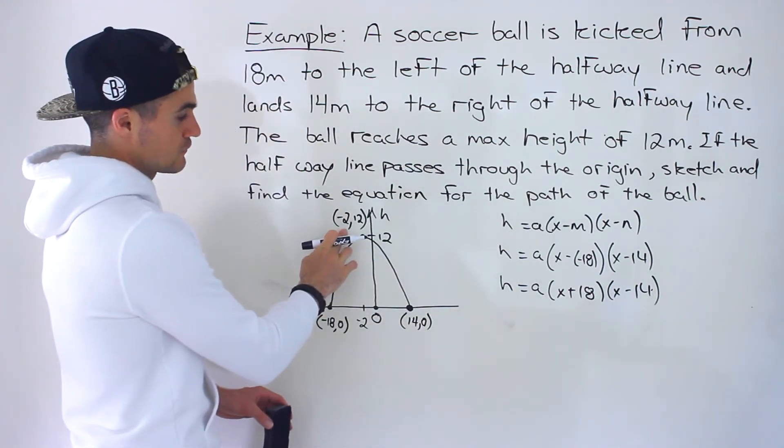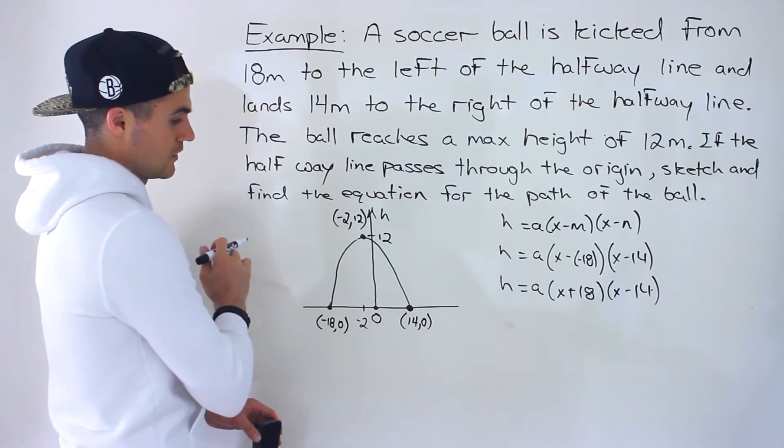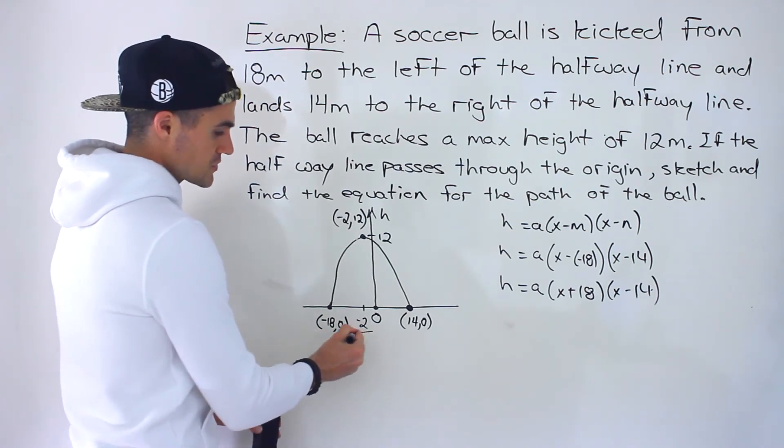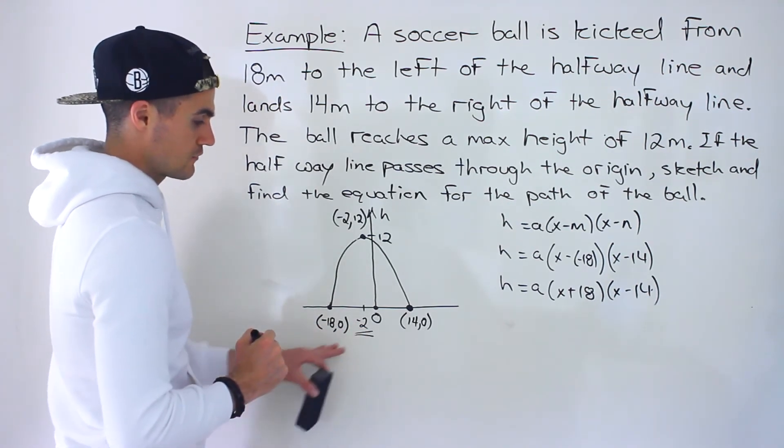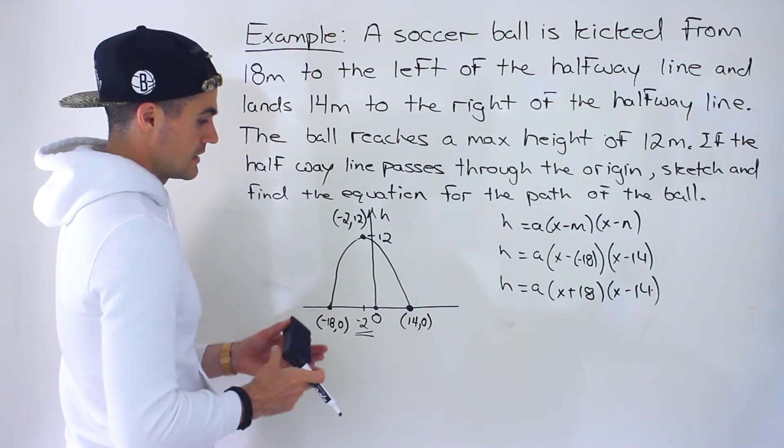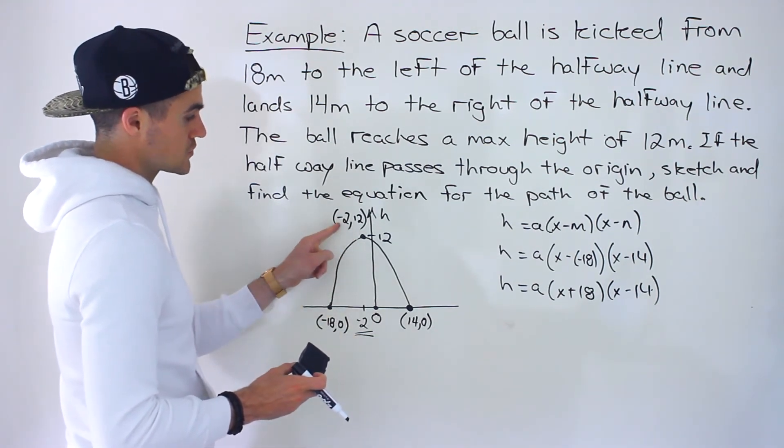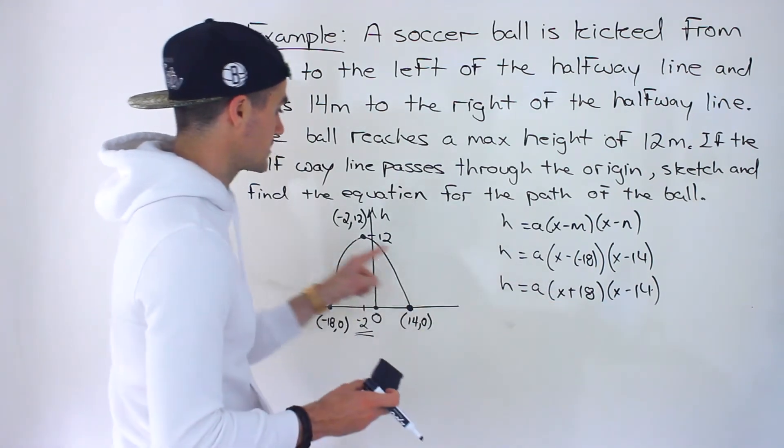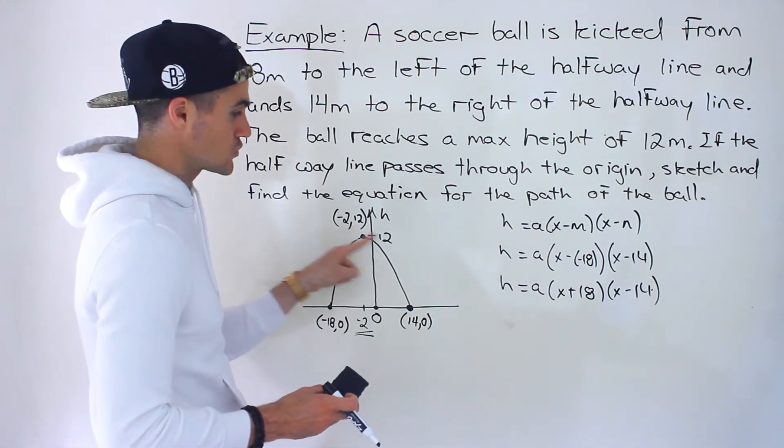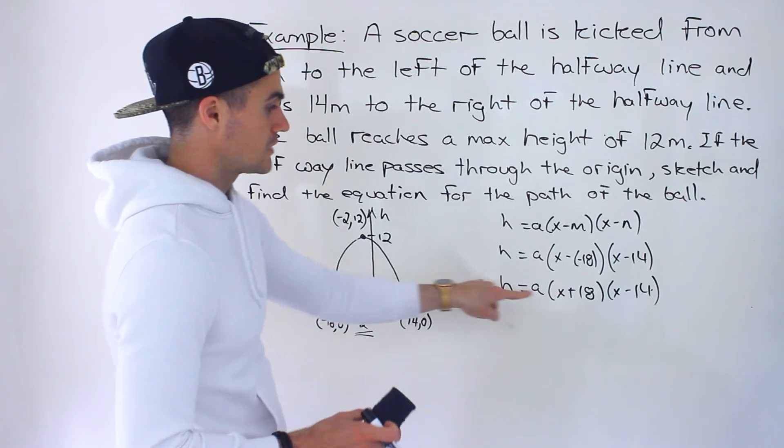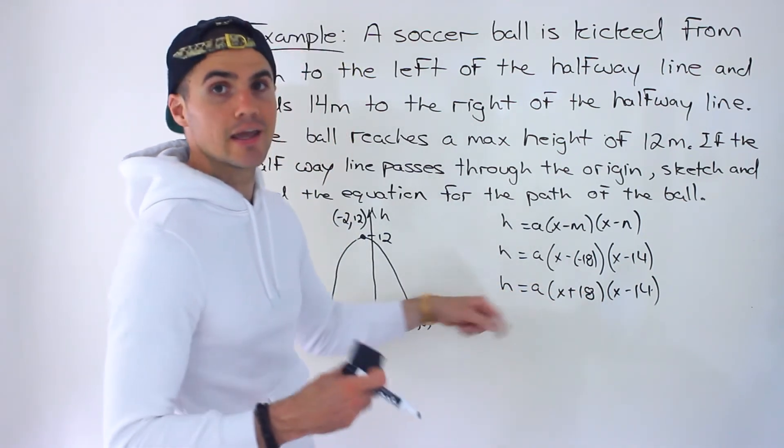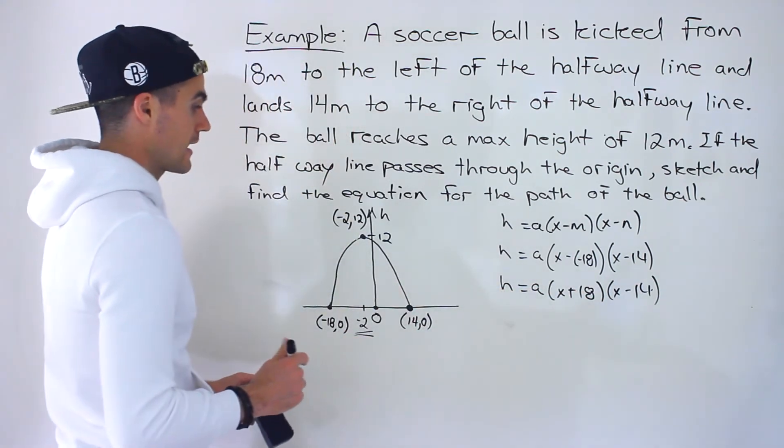We could plug in this negative 2 and 12. So one of the tricks in this question was figuring out that negative 2. We have to find the axis, the x value where this maximum point is occurring, because we need an x coordinate to plug in. It's not enough just to have that max height of 12 to plug in here. We need to plug in the x value in order to properly solve for that a.